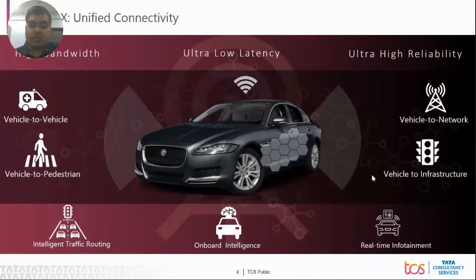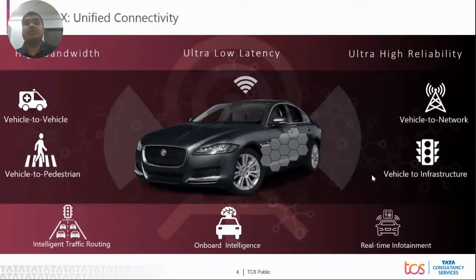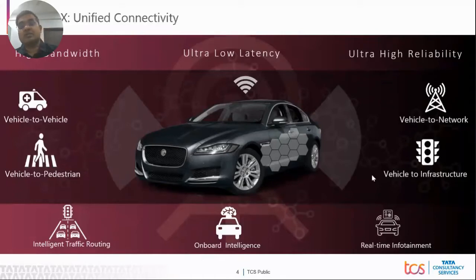The second prominent use case is autonomous vehicles with onboard intelligence — my vehicle can think for itself, it has its own brain. Then there is real-time infotainment, where you can have live TV in your vehicle and all entertainment scenarios without needing your mobile phone. These use cases make low-latency and high-reliability communication connectivity a very important factor for this industry to evolve.